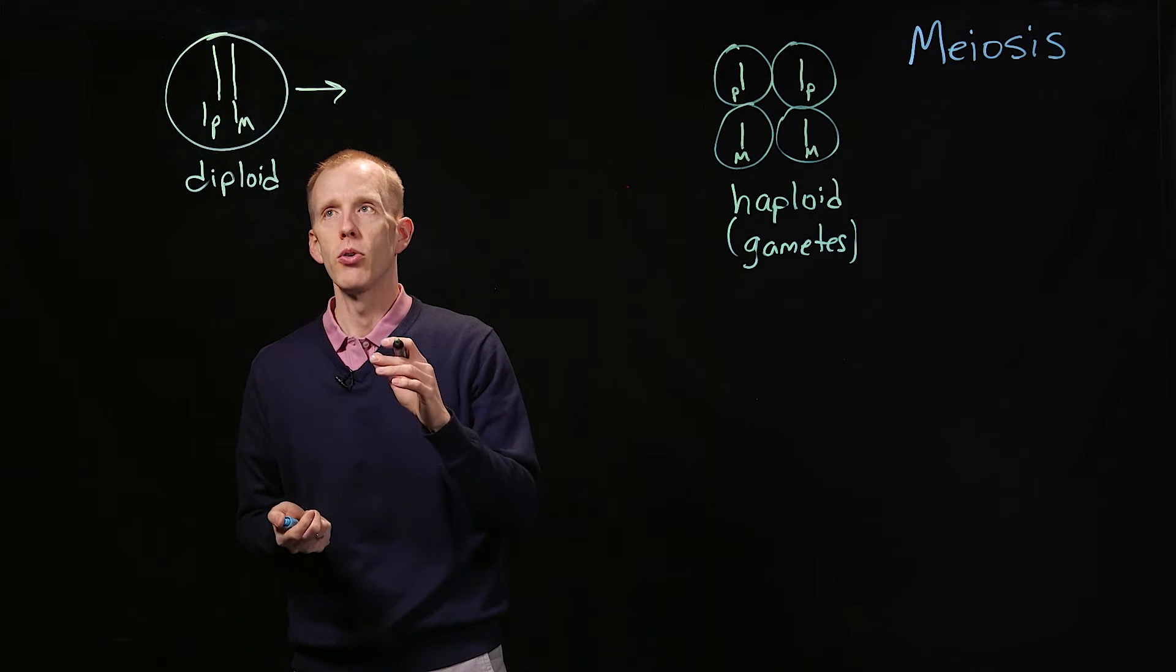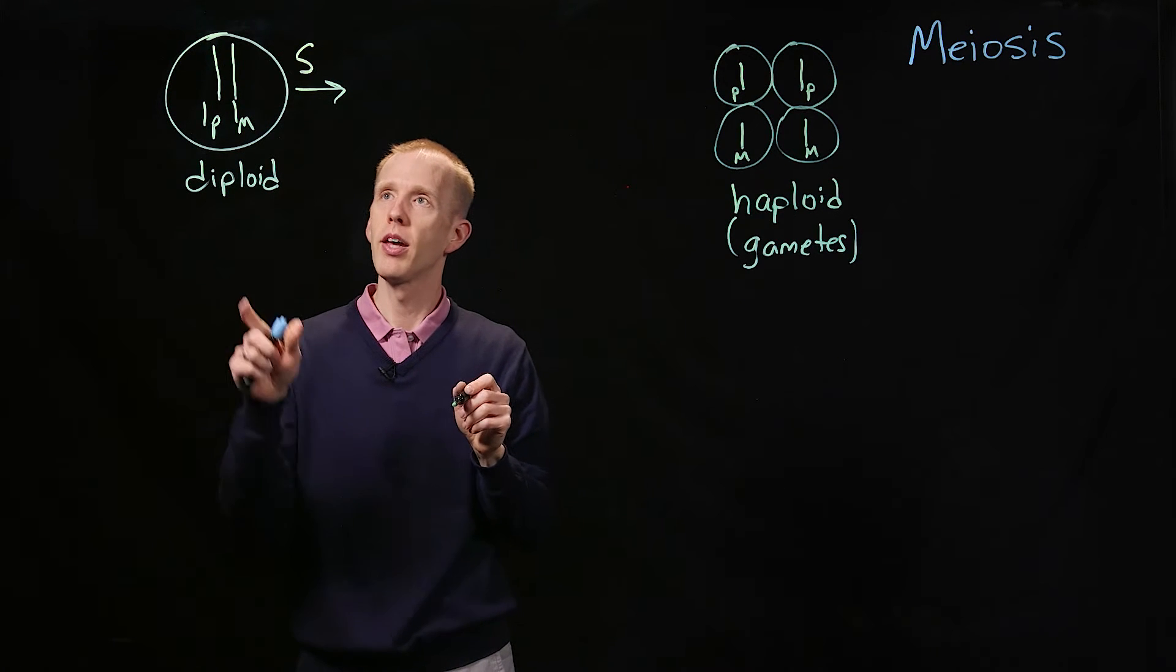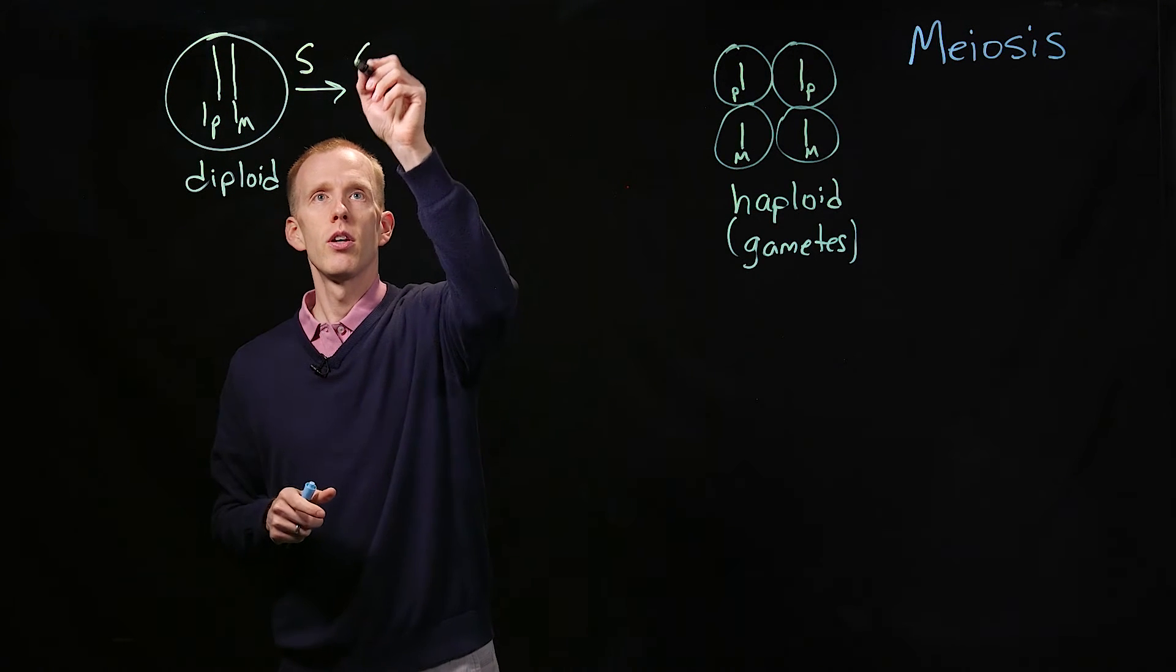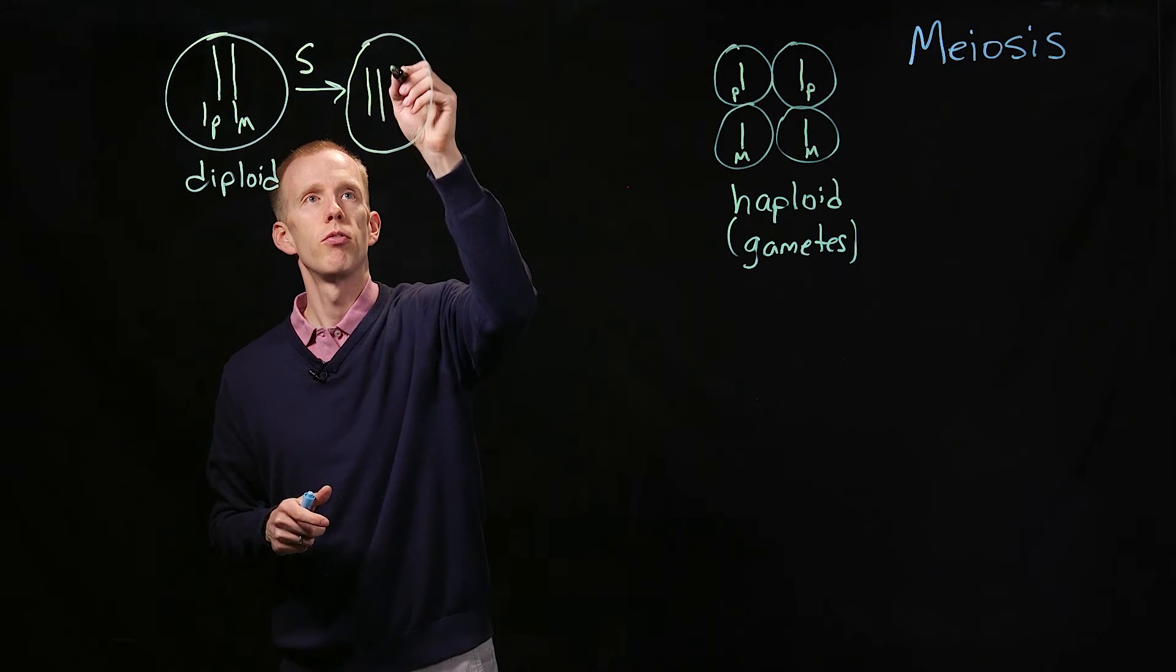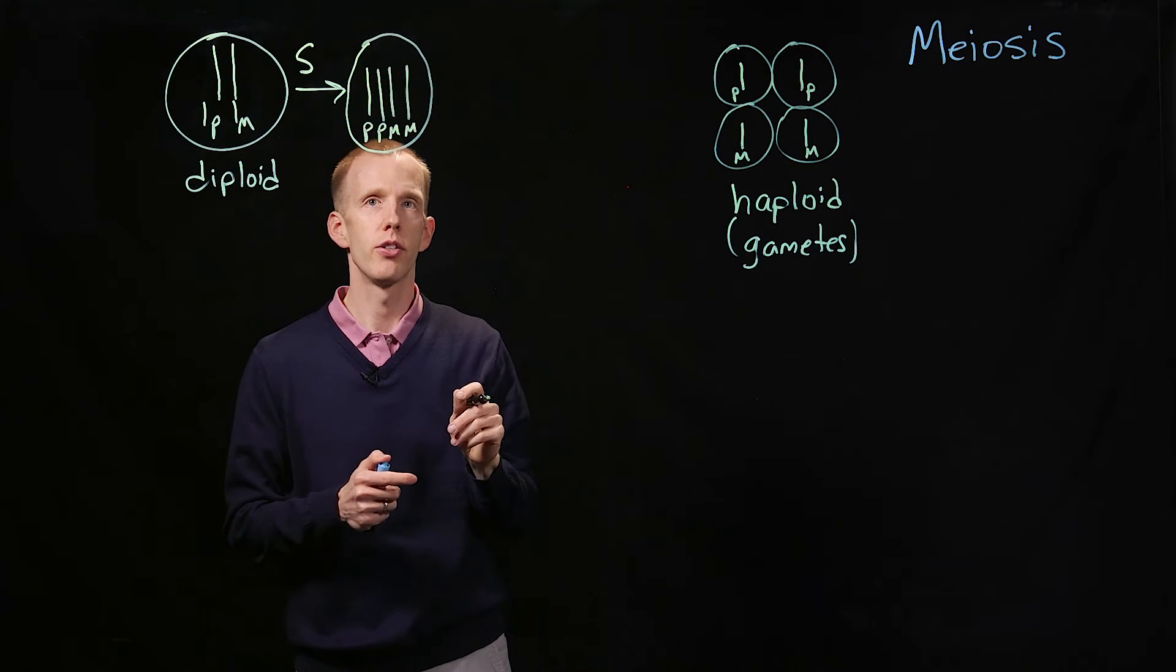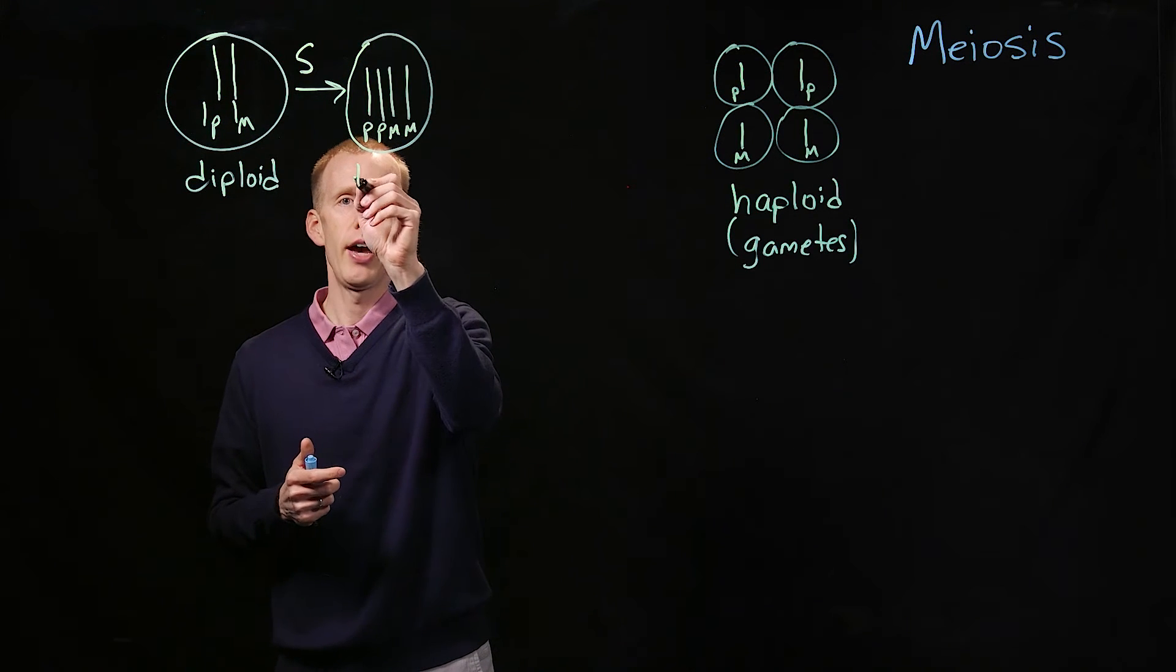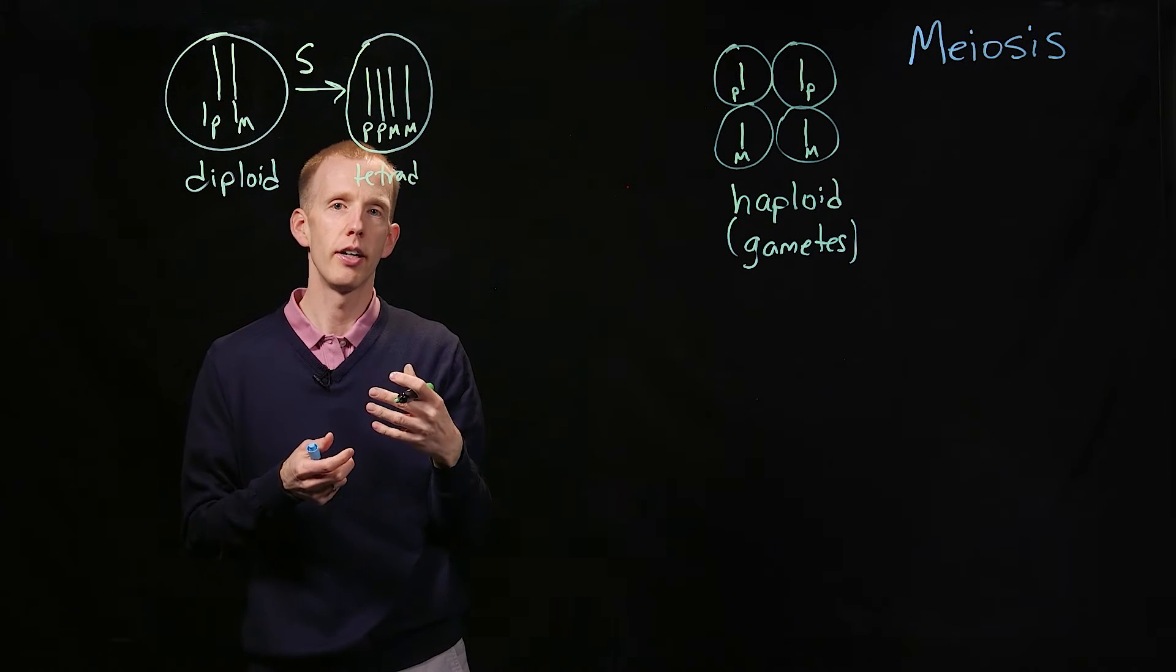The first step of meiosis is, in mitosis this is a similarity between the two, synthesis. We have a situation where we have four copies of chromosome 1, the two paternal and the two maternal versions, and this is called a tetrad, for four copies of chromosome all lined up together.